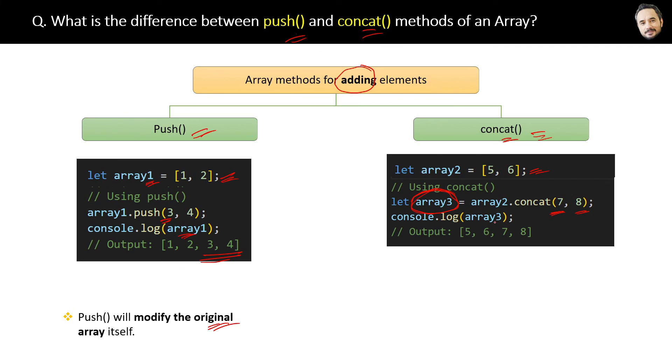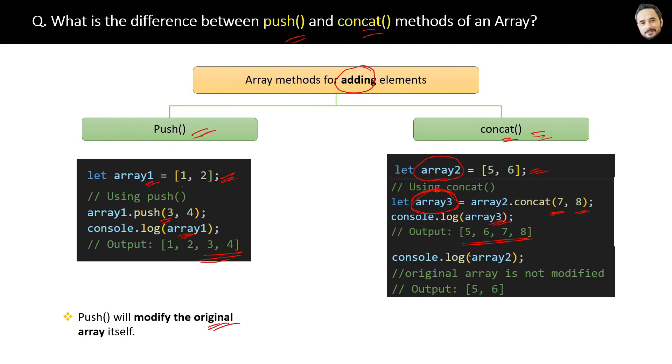So when you log this array 3, it will give you the modified result. That's fine. But if you log the original or old array 2 like this, then the original array is still unchanged and not modified.